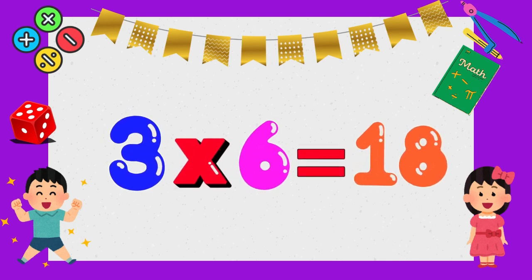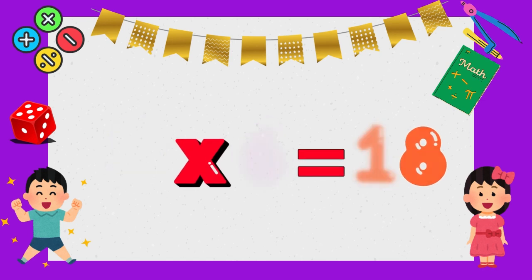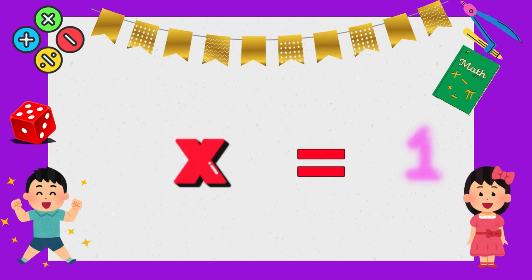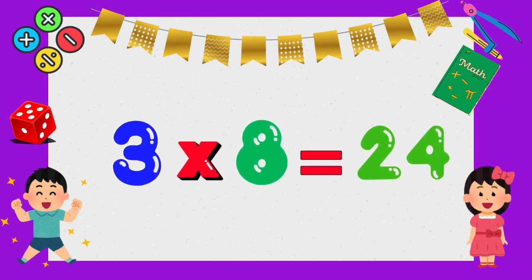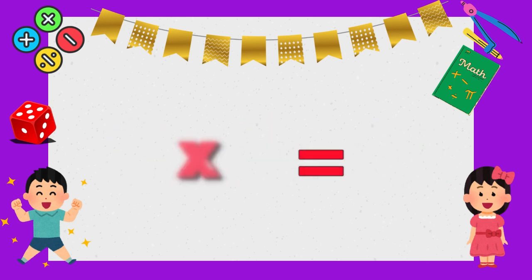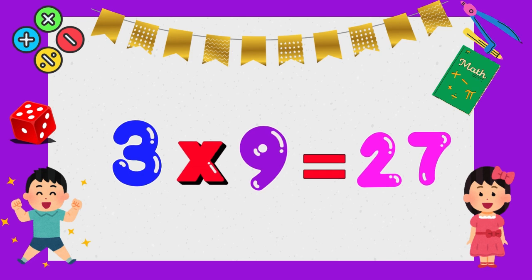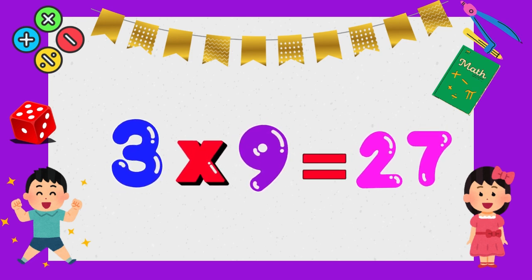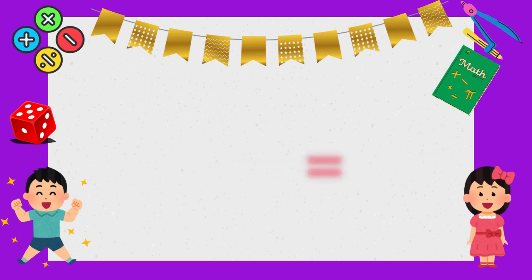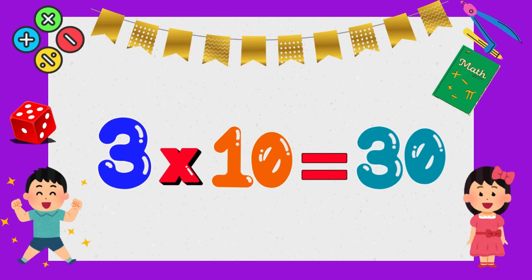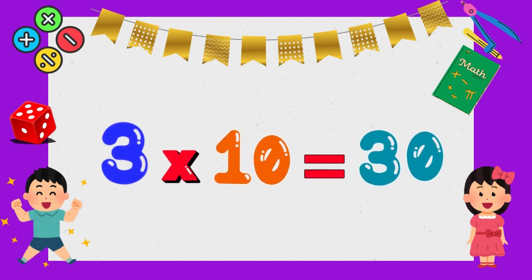Three times six is eighteen. Three times seven is twenty-one. Three times eight is twenty-four. Three times nine is twenty-seven. 3 times 10 is 30.